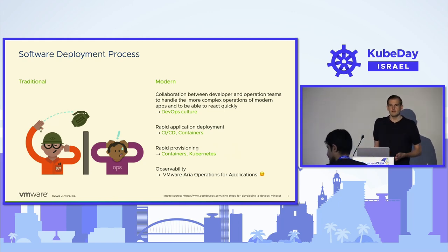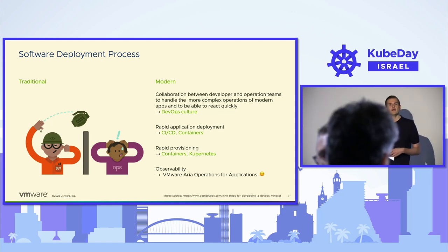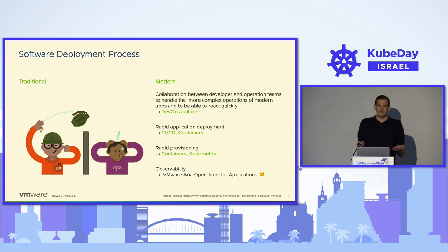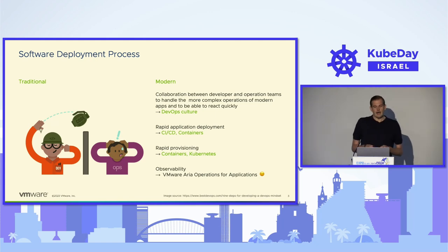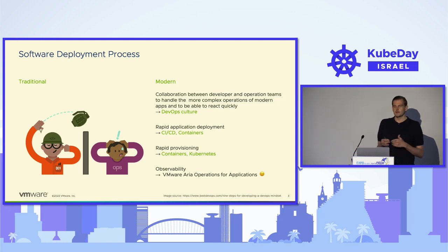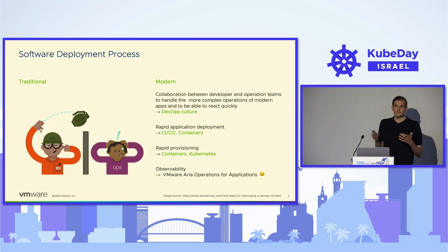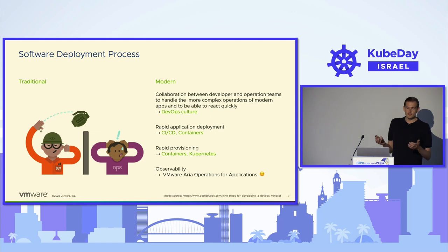Before we start talking about technologies, let's first look at why we need them. In the traditional software development process, software was handed over to operations teams responsible for deploying and supporting applications. Long release cycles led to increased project risk and costs. Because of that, modern software development moved from a waterfall process toward an agile approach, and huge complex applications were split into smaller, loosely coupled microservices implemented by smaller teams. This created a need for collaboration between developers and operations — a DevOps culture — supported by automation and self-service capabilities.